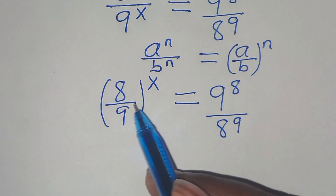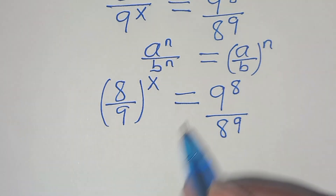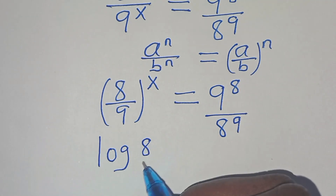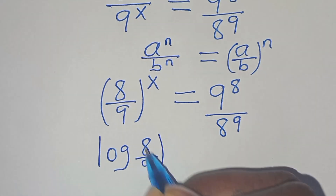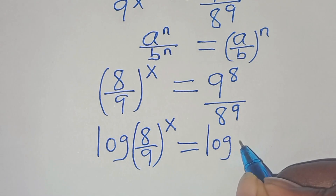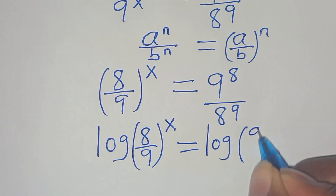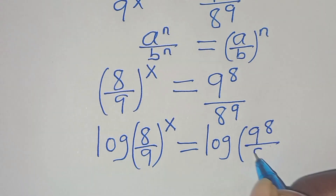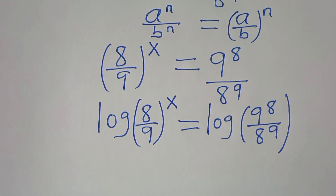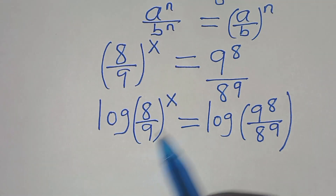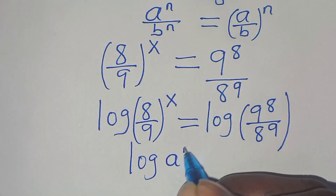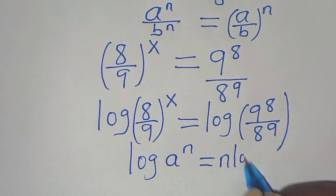To solve for x, we introduce logarithms on both sides, so we have log of (8 over 9) raised to the power of x, equal to log of 9 to the power of 8 divided by 8 to the power of 9. Log of (8/9) to the power of x is in the form of log a to the power of n, which can be expressed as n times log a.